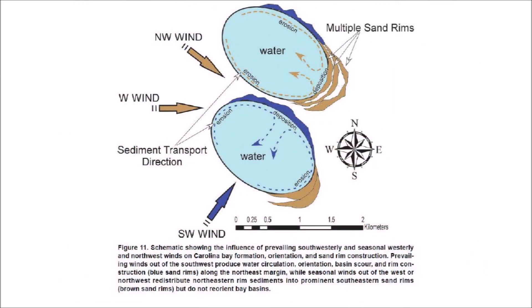The paper states that Carolina Bay basins can migrate yet maintain their characteristic shape and orientation, demonstrating that they are oriented lakes that evolved through lacustrine and aeolian processes. Figure 11 describes the influence of prevailing southwesterly and seasonally westerly and northwest winds on Carolina Bay formation, orientation, and sand rim construction. Prevailing winds out of the southwest produce water circulation, orientation, basin scour, and rim construction along the northeast margin, while seasonal winds from the west or northwest redistribute northeastern rim sediments into prominent southeastern sand rims but do not reorient bay basins.